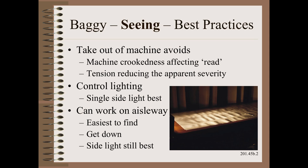Second, control the lighting. Overhead lights with shadows are not helpful. Find an area with uniform lighting that is not very bright. Low angle side lighting is best. This is done most simply by having a partner hold a strong flashlight or lamp either on the side or perhaps the opposite end. While some go the extra mile and construct a dedicated inspection booth, a flat aisle way is something that nearly everyone has — just make sure to not get in the way of forklift traffic and be safe.